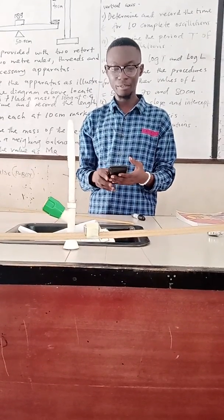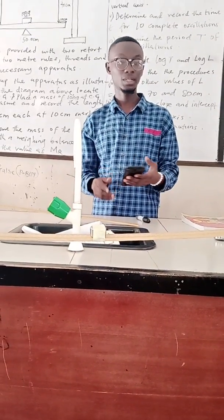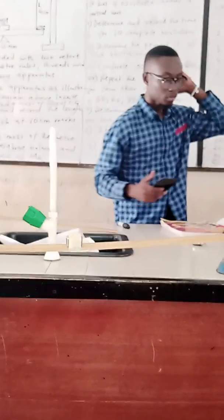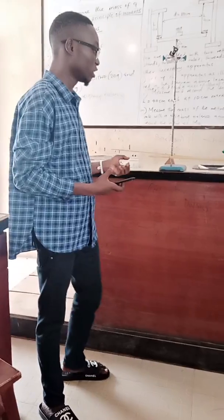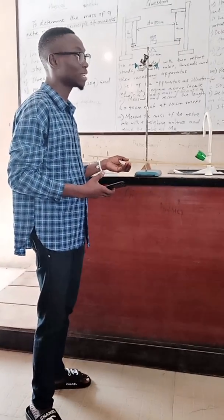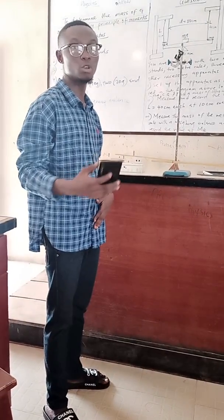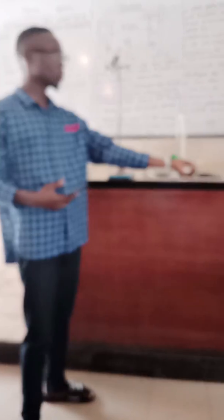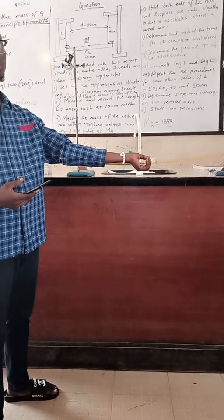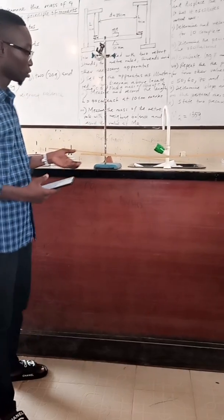For this case, I will be using my phone as a stopwatch. What we are going to do right now is to displace this to a certain angle and measure the time for 10 complete oscillations. Make sure that this 100 gram mass is at the center of gravity, which is at the 50 cm mark. So I am going to displace this.